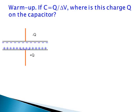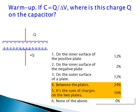One of the questions on your warm-up asks you about the meaning of the formula for the capacitance. If C is equal to Q over delta V, where is the charge Q on the capacitor? Here is the breakdown of your answers. Most students think that the charge Q is located either between the plates or equal to the sum of charges on both plates.